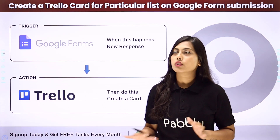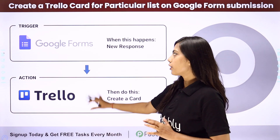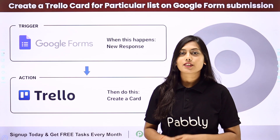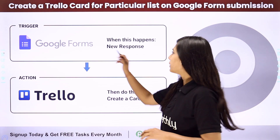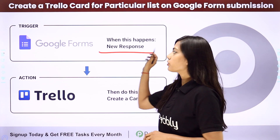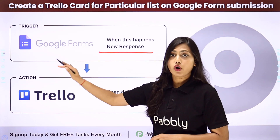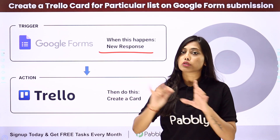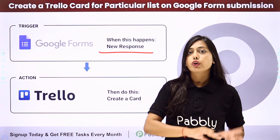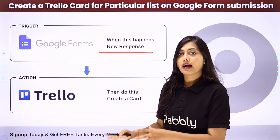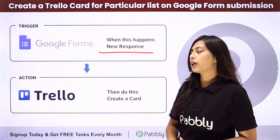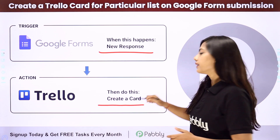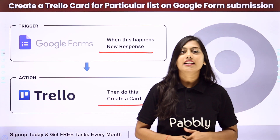We can create an automation for this whole process with the help of Pabbly Connect, where our trigger will be the new response received from Google Forms, which will be further added in Google Sheets. We are going to retrieve from that, and then our action application will be Trello where we will create a card.